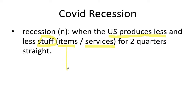Items means producing less planes, less cars — physical things. Services is when you do something for somebody but you don't make something physical for them. So for example, a service is if you go get your oil changed or your car fixed at a mechanic. The mechanic fixes your car — he uses his body to fix the car, but he didn't make something new for you, he didn't make a new item for you.